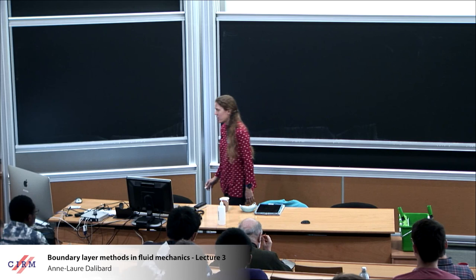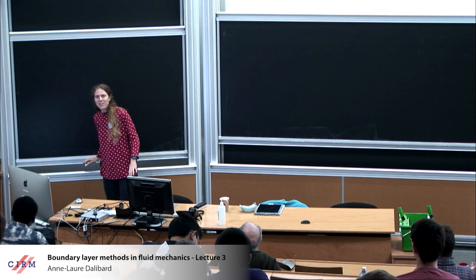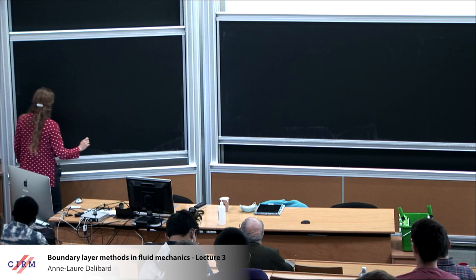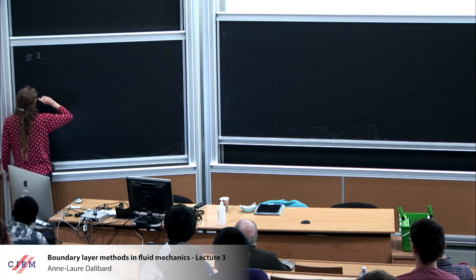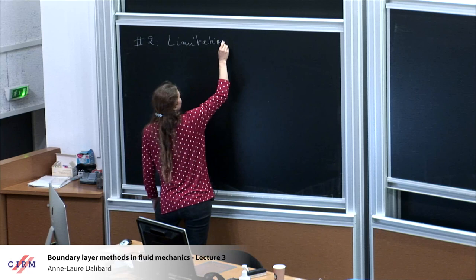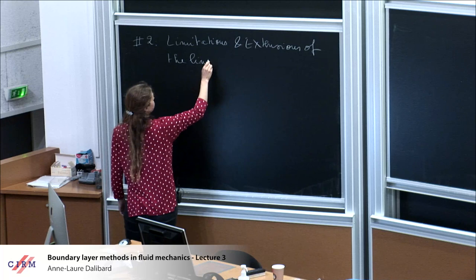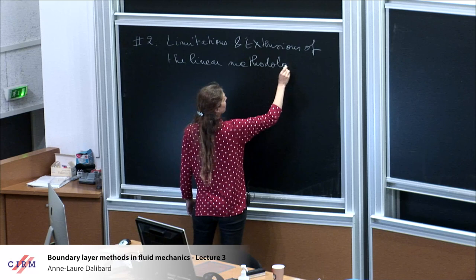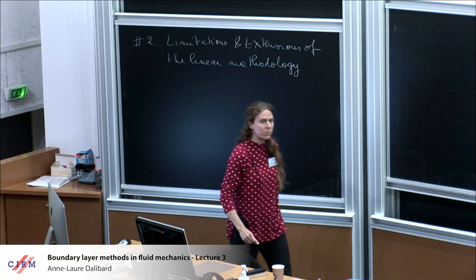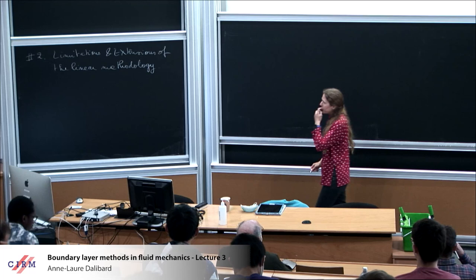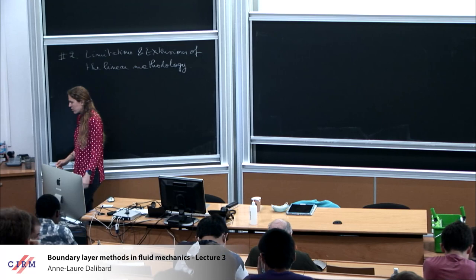I'll start by finishing yesterday's lecture since I ran a bit late. I'm still within the second lecture where I was explaining limitations and extensions of what I call the linear methodology. Yesterday I explained the degenerate cases, and at the very end I introduced another extension I wanted to present: the case of rough boundaries.